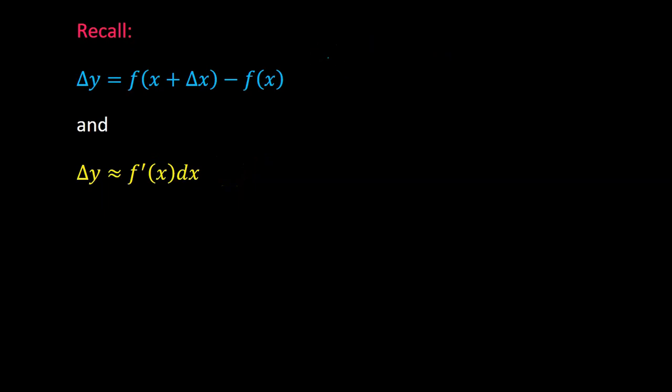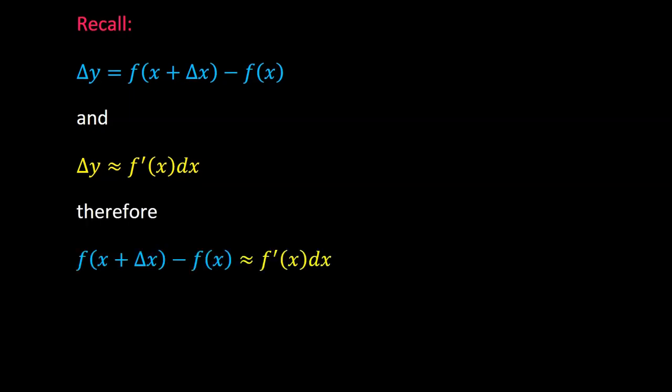We also know that you can approximate the change in y using the differential, f prime of x dx. But if delta y is equal to the blue expression, and delta y is approximately equal to the yellow expression, then it makes sense that the blue expression is approximately equal to the yellow expression.